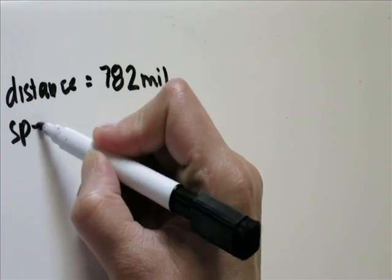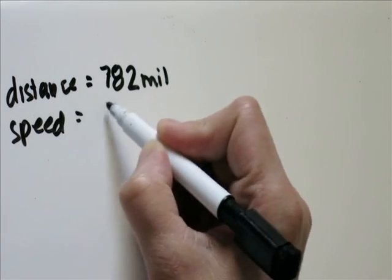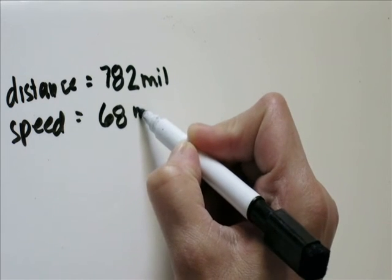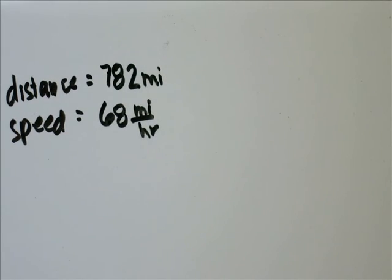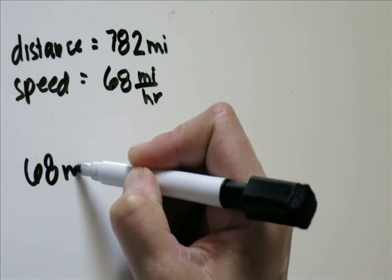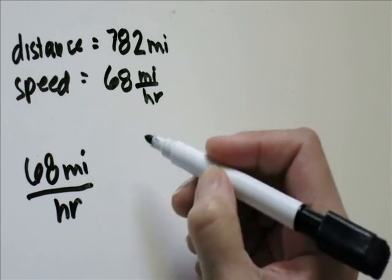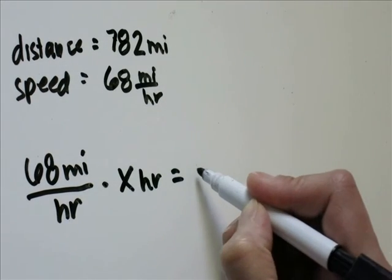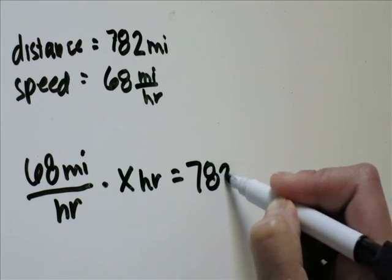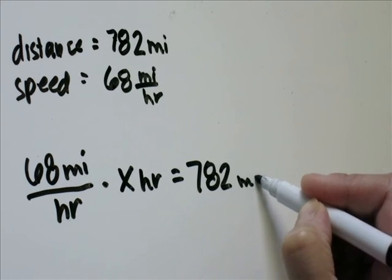Their speed is 68 miles per hour. We want to know how long is the trip going to take. Say 68 miles per hour times x hours would equal 782 miles.